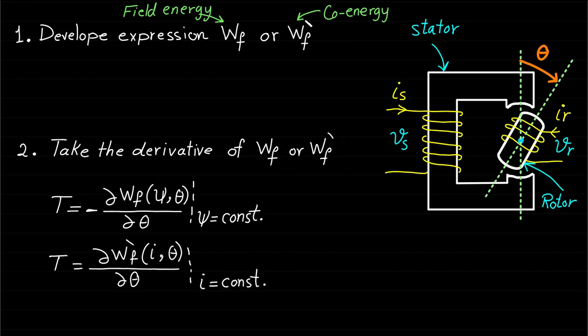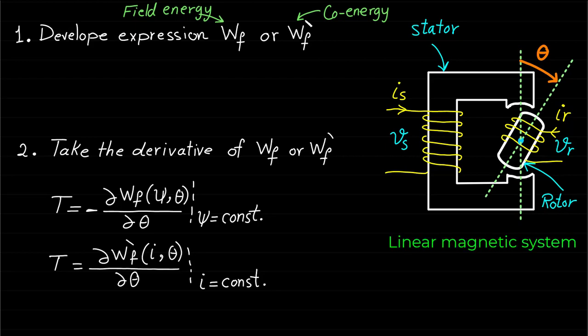Note that we are going to assume that this double excited system is a linear magnetic system to simplify the mathematical derivation. Now let's first derive the field energy expression for this double excited system.